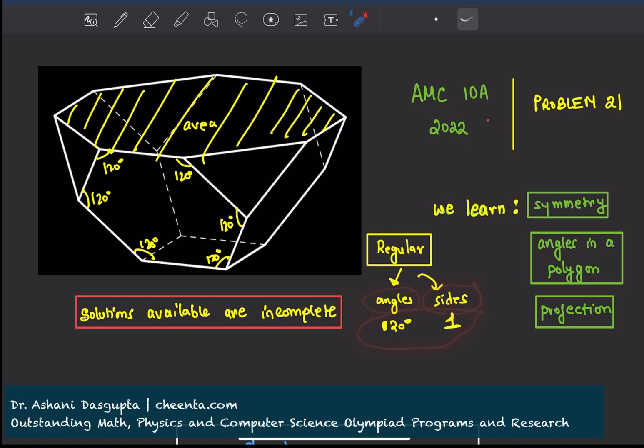For example, if you have a rhombus, rhombus is not a regular polygon. Its sides are all equal, but the angles are not.